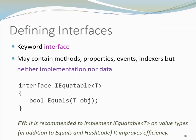Now that we have the focus on the interface iEquatable, I want to add one more thing. Whenever you implement Equals and GetHashCode for a struct, also implement IEquatable<T>. It reduces the need for boxing, and it positively impacts the efficiency of your code.